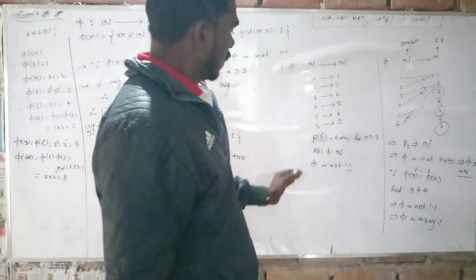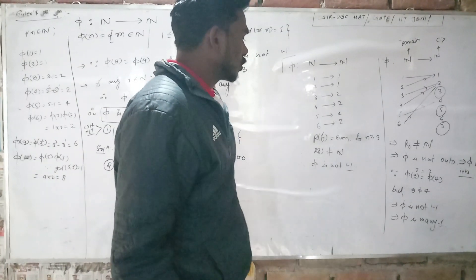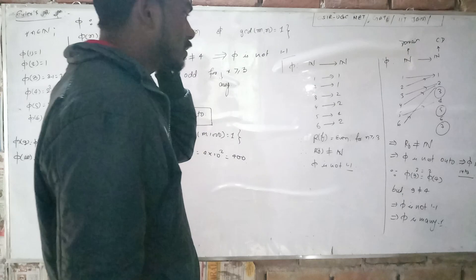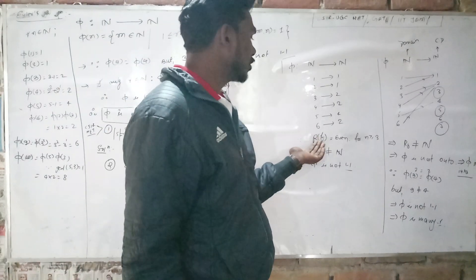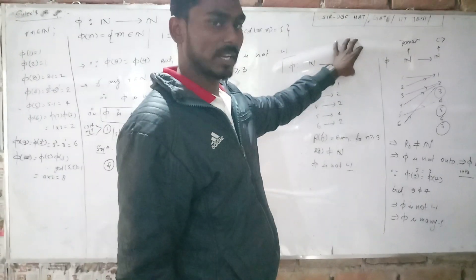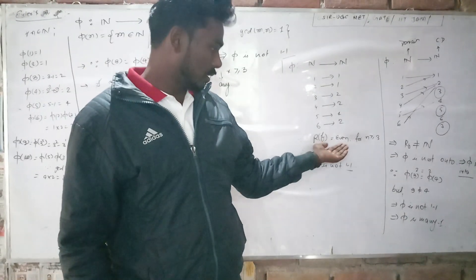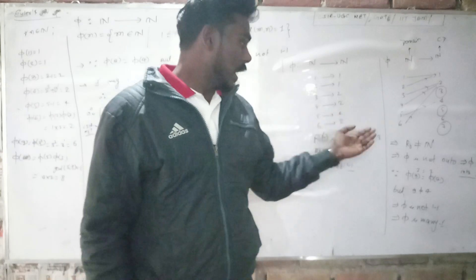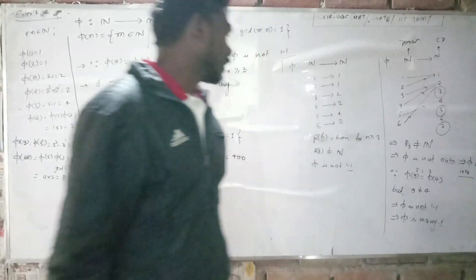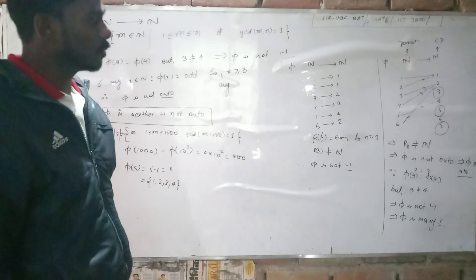For the function to be onto, the range must equal the codomain. Here, the range of the function is only even numbers for n greater than or equal to 3. This means the range does not equal the codomain.